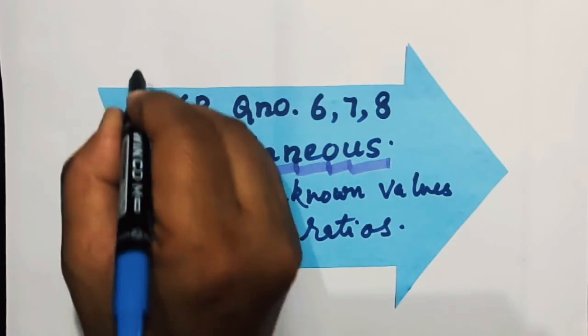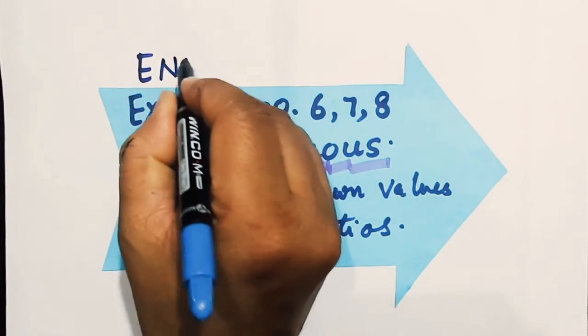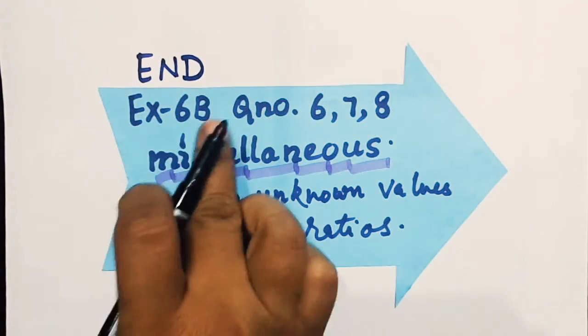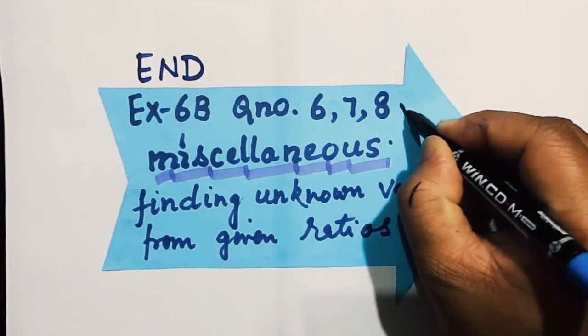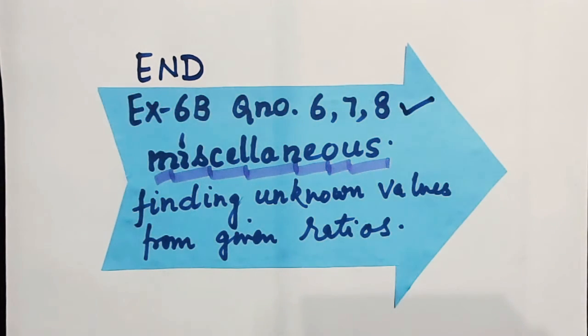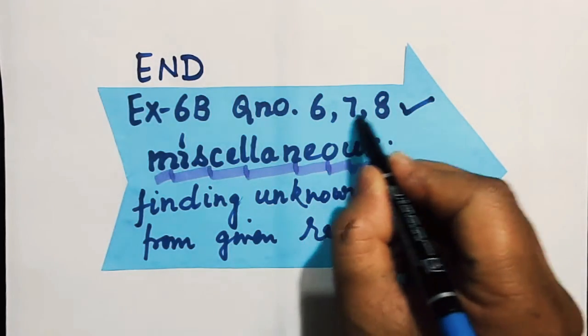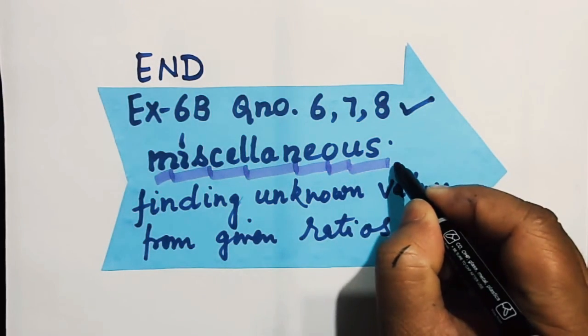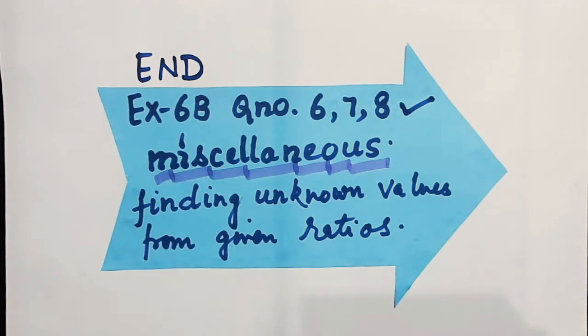We have come to the end of exercise 6B, in which today we shall be dealing with questions 6, 7, and 8. Today we shall be studying 6, 7, and 8, and I can categorize these in the name of miscellaneous sums.